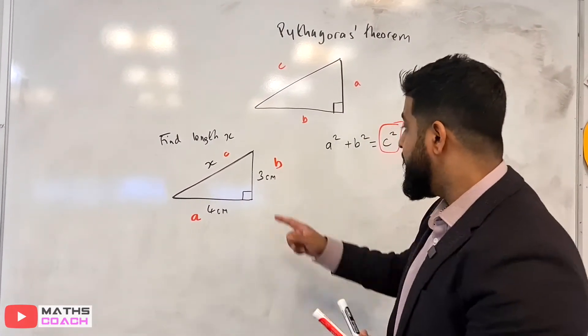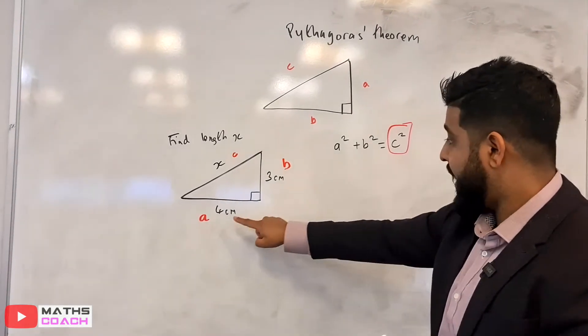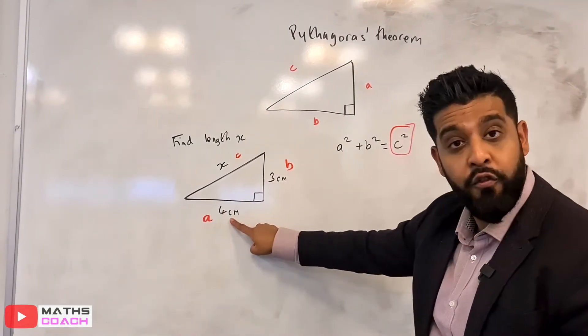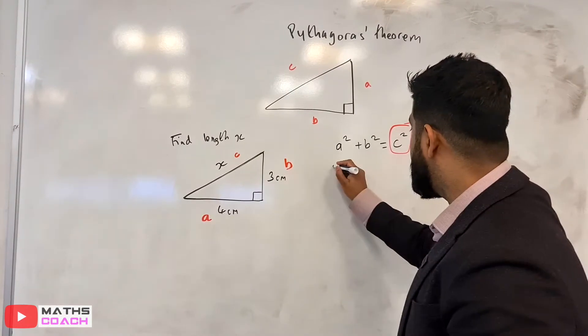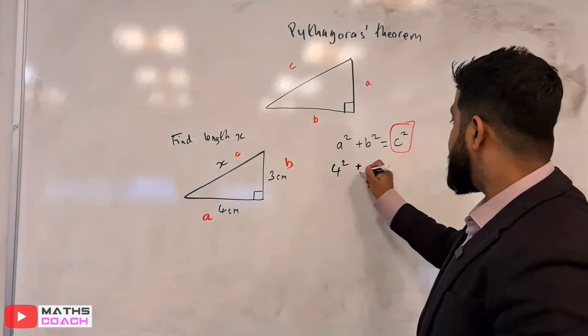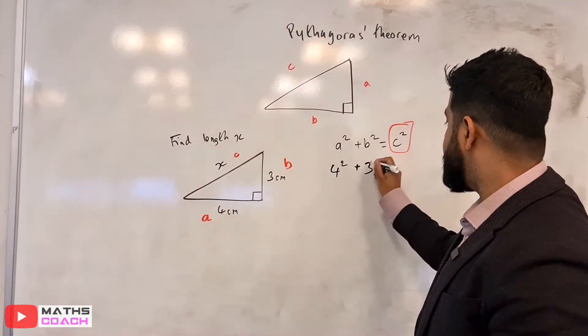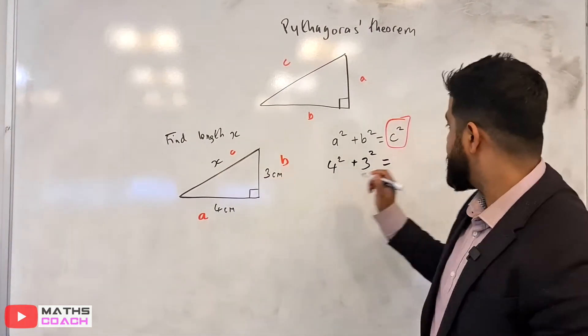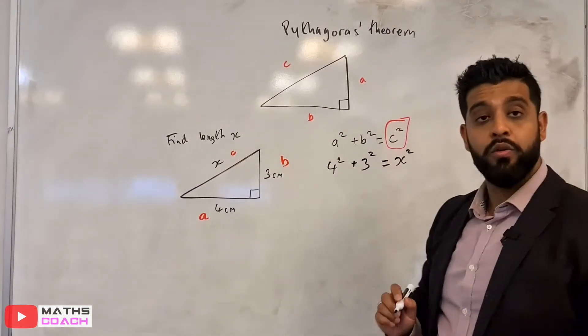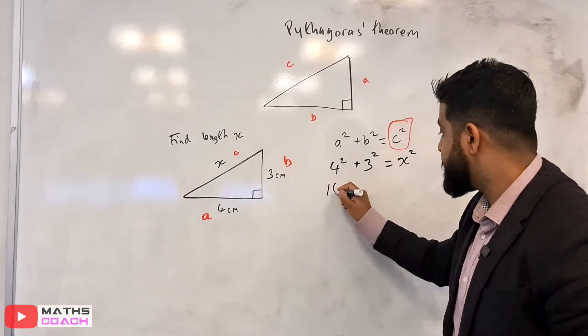So we're going to write it down again, so according to this, so A here is 4, so we are going to write here 4 squared, plus B, which is 3, we're going to have 3 squared. And that's equal to X, so that's going to be X squared. And we work this out, so 16, 4 squared.